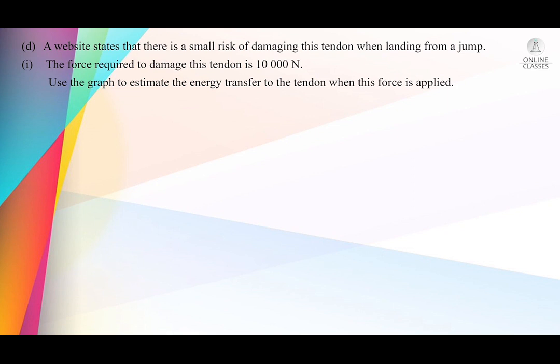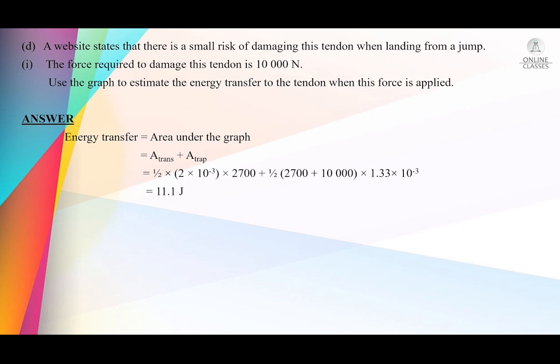Part D: a website states there is a small risk of damage to the tendon when landing from a jump. The force required to damage the tendon is 10,000 Newton. Use the graph to estimate the energy transferred to the tendon when this force is applied. Energy transfer equals the area under the graph. The area can be split into a triangle part and a trapezium part. Work out the triangle as half base times height, and the trapezium as half (a + b) times h. After converting millimeters to meters, you get 11.1 Joules.